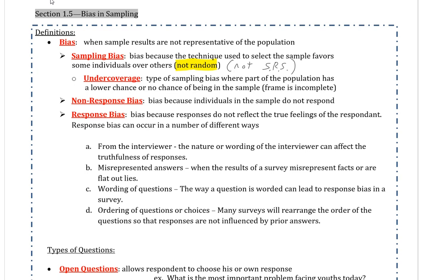The other types of bias we talk about are non-response and response bias. There are more than this, but these cover the majority. Non-response bias is bias because individuals in the sample do not respond, which sounds obvious but can be a huge problem, particularly in voluntary response studies. Most voluntary response studies have this issue.